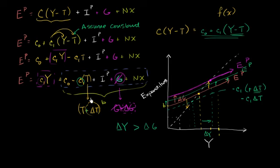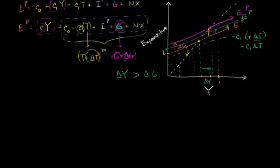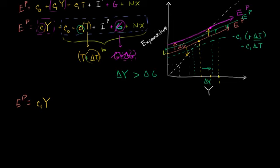One thing I touched on in the last video: whatever our change is, however much we shift the aggregate planned expenditure curve, the change in output was actually some multiple of that. I want to show you mathematically that the multiple is the multiplier. So going back to the original expression: planned expenditure equals marginal propensity to consume times aggregate income, plus all the remaining autonomous terms — let's just call that B — which we can substitute back in later.